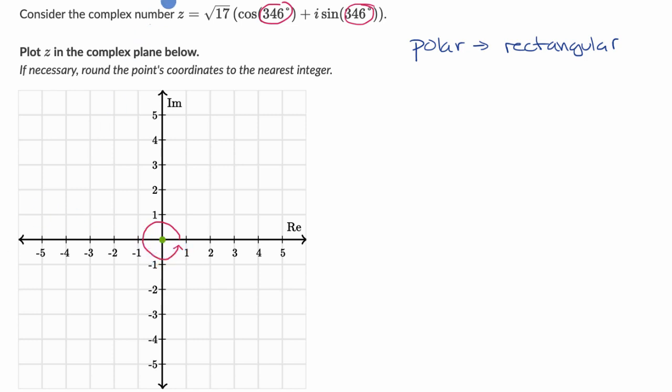And then we also see what the magnitude or the modulus of the complex number is right over here, square root of 17. Square root of 17 is a little bit more than four because four squared is 16. So if we go in this direction, let's see, that's gonna be about one, two, three, four. We're gonna go right about there.